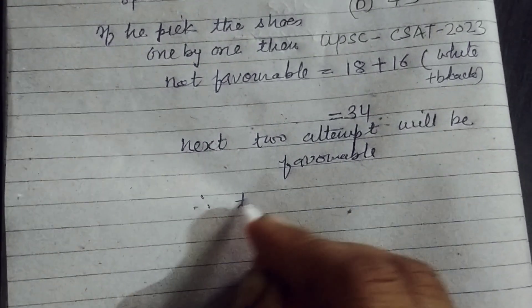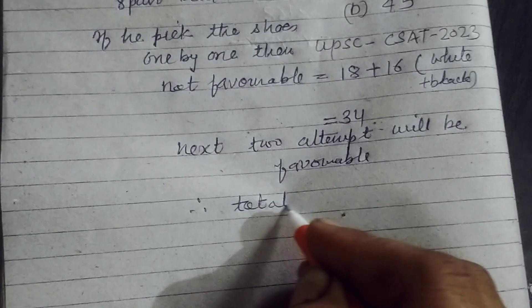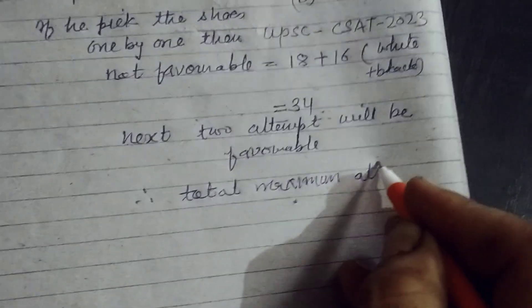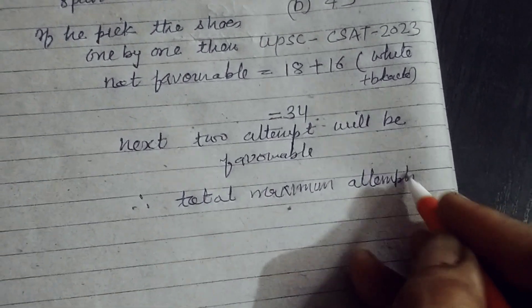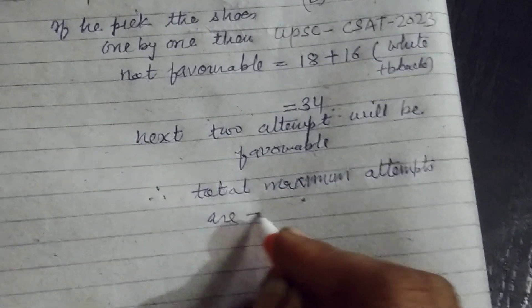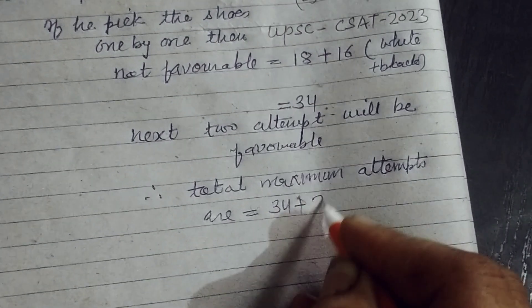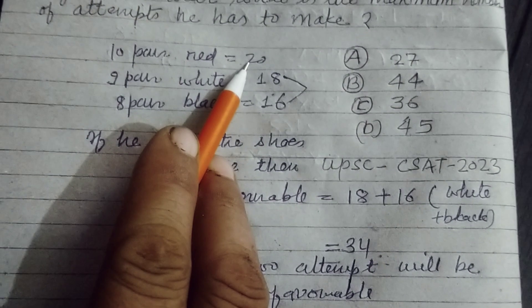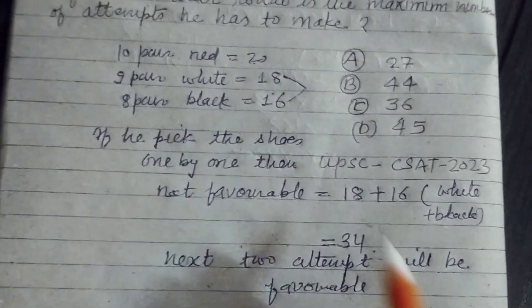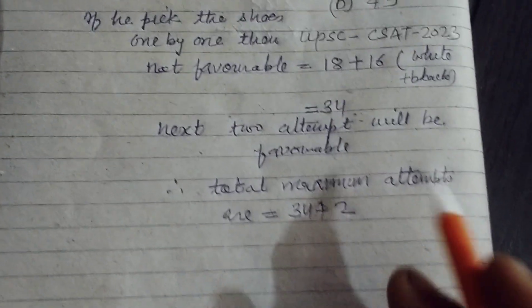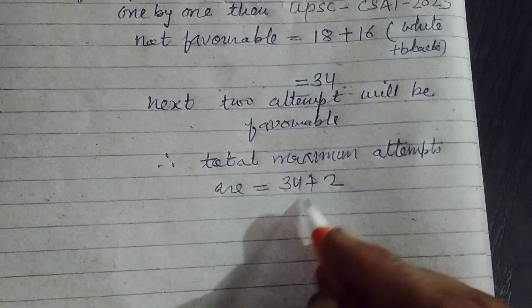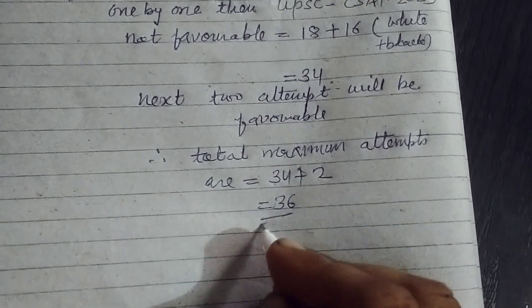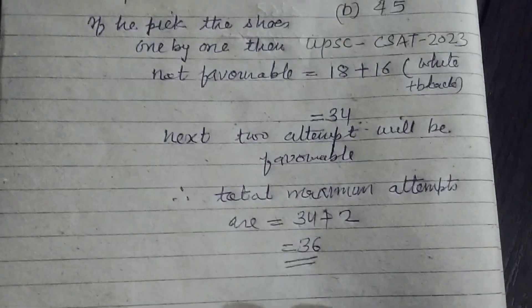So total maximum attempts are 34 plus 2, because he requires 2 shoes which will come out from 20. They are red, so 34 plus 2 is 36.